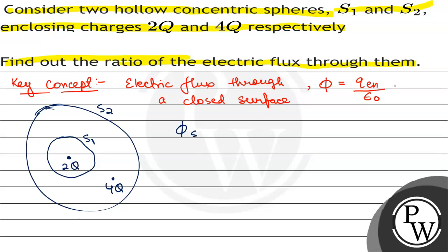Electric flux through S1 will be equal to q enclosed in S1 that is 2Q by epsilon naught. And φ through S2, the q enclosed in S2, S2 contains both the 2Q charge and 4Q charge.